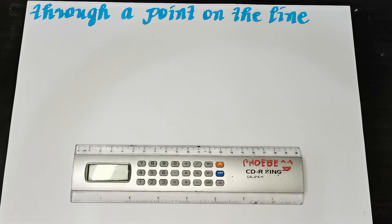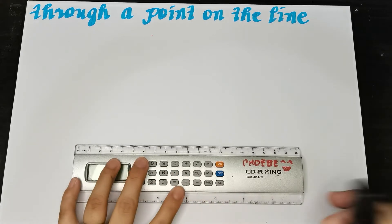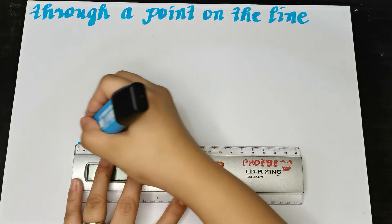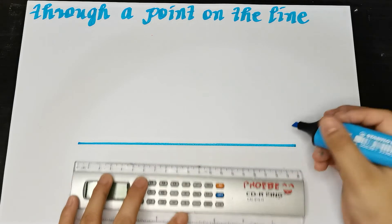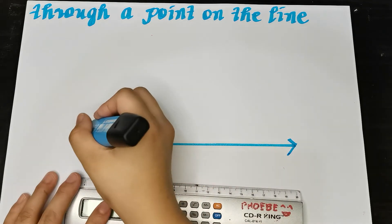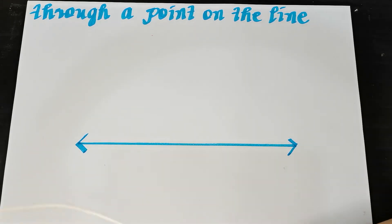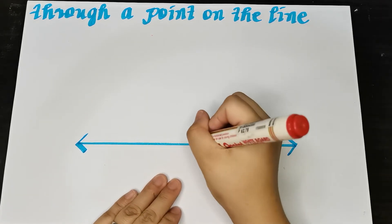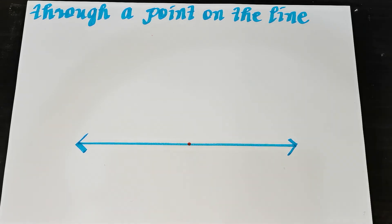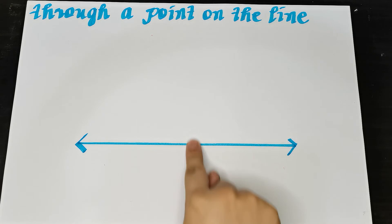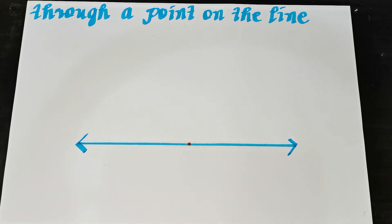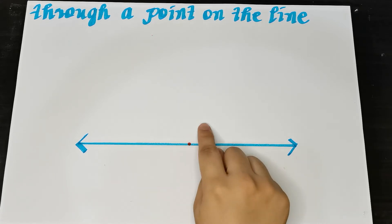So let us first do 'through a point on the line.' When we say through a point on the line, the point is already on the line. For the 'not on the line' type, there is no point on the line to serve as our basis. And to do this, of course, we need to have a line. This serves as my line, and then there is a point somewhere here on it. Remember, perpendicular lines are two lines that are perpendicular to each other, forming a right angle.